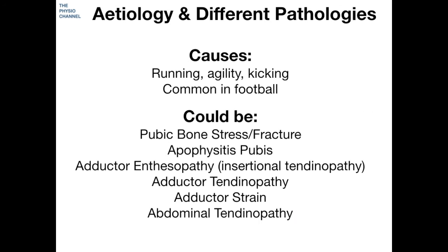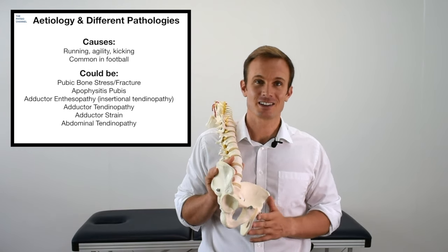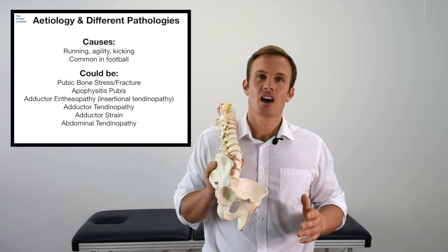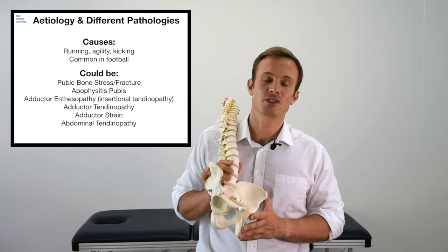The common causes of adductor tendinopathy are running and in particular direction changes found with agility training, and also the kicking action in football, American football, and rugby. This condition is also common in sports involving other rapid direction changes, which includes many competitive team sports. Other pathologies that could occur in this region include pubic bone stress and stress fractures, apophysitis pubis, adductor enthesopathies — otherwise known as insertional tendinopathies — adductor strains, and abdominal tendinopathies.